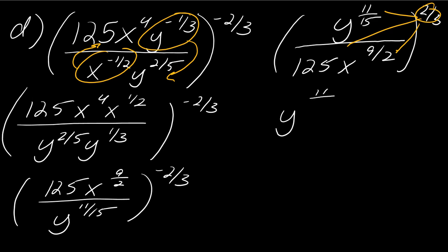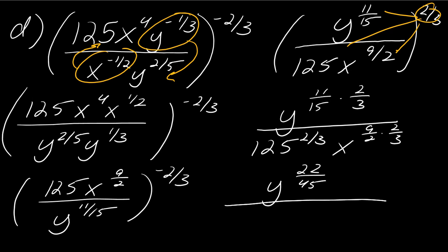Okay, so I'm going to have y to the 11 over 15 times 2 over 3. I have 125 to the 2 thirds. And then I have x to the 9 halves times 2 over 3. Okay, so this all will simplify then to, let's see, this becomes y to the 22nd over 45. 125 to the 2 fifths. So the cube root of 125 is 5. 5 squared is 25. And then here, the 2s cancel out and the 3 divides with the 9. So this actually just becomes x to the 3rd.